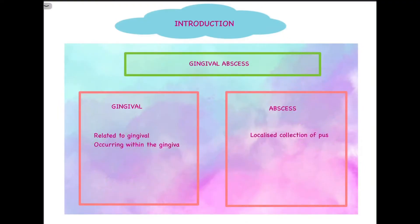The word gingival abscess is derived from two words: gingival and abscess. By gingival, we mean this particular abscess or disorder is related to the gingival tissues and it is occurring within the gingiva — not in the periodontium, not in the tooth structure per se. By abscess, we mean it is a localized collection of pus, which consists of dead and dying neutrophils, various WBCs apart from neutrophils, bacteria, and epithelial cells derived from host cells.